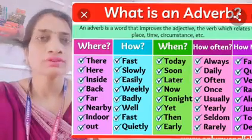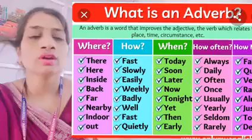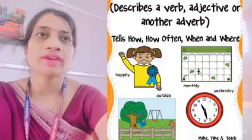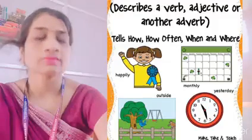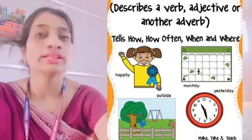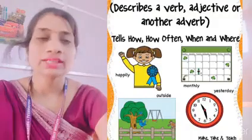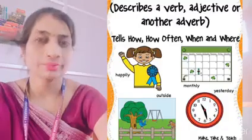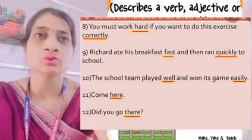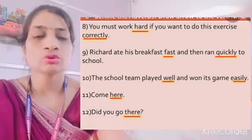So these are some of the words that are known as adverbs. The words that tell us where, how, and when the action took place — koi bhi action kahan hua hai, kab hua hai, kaisa hua hai, aur kitni baar hua hai — unhein hum adverbs kehte hain. Now students, I have some examples. From those examples, it will be easier for you to understand, so we are going to underline them. Let's go through them.